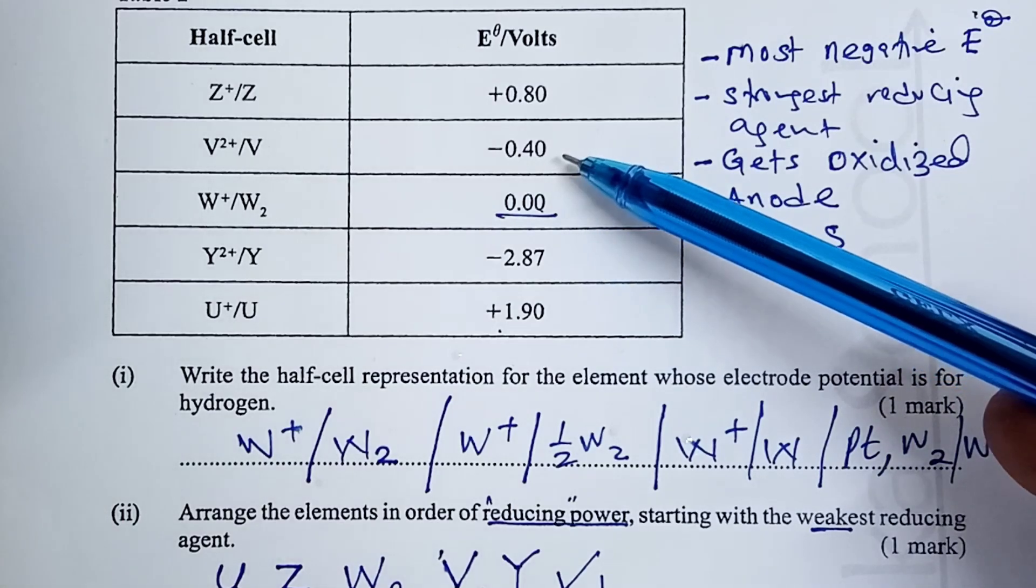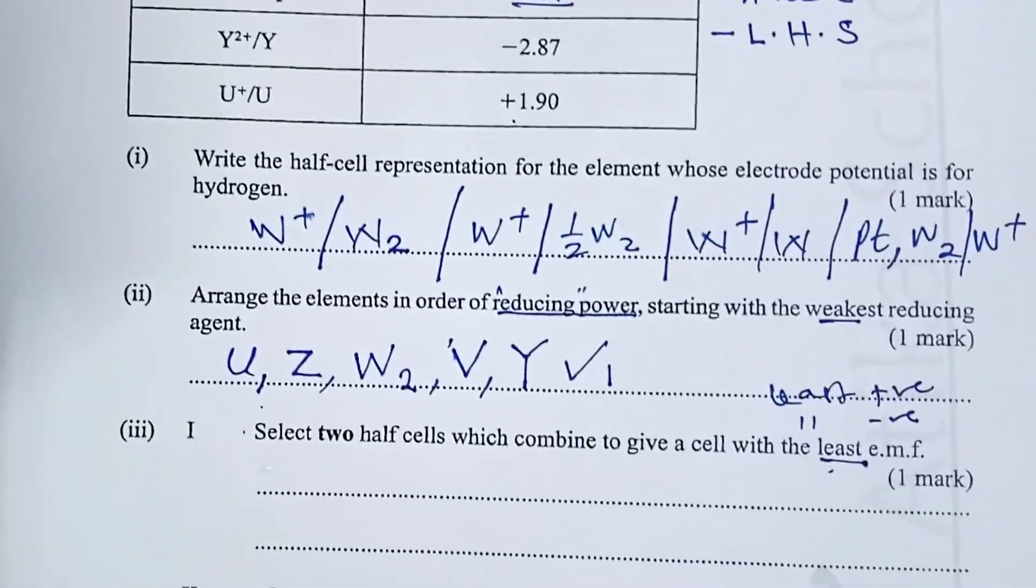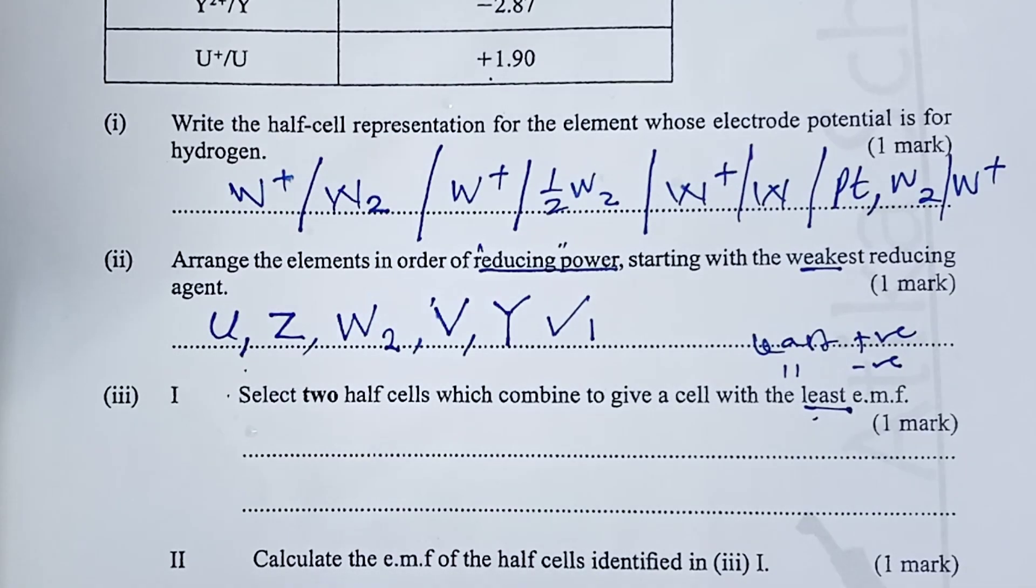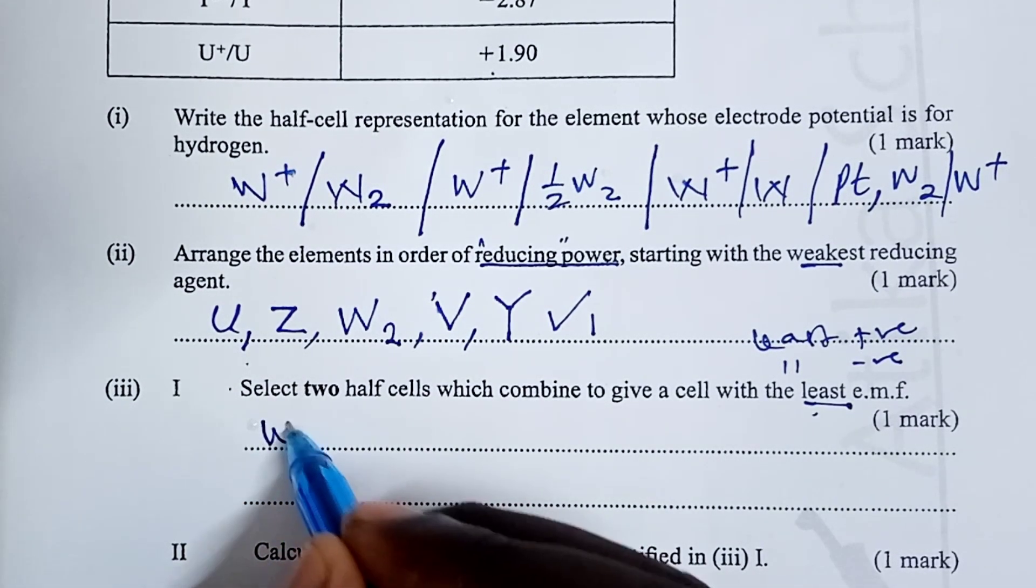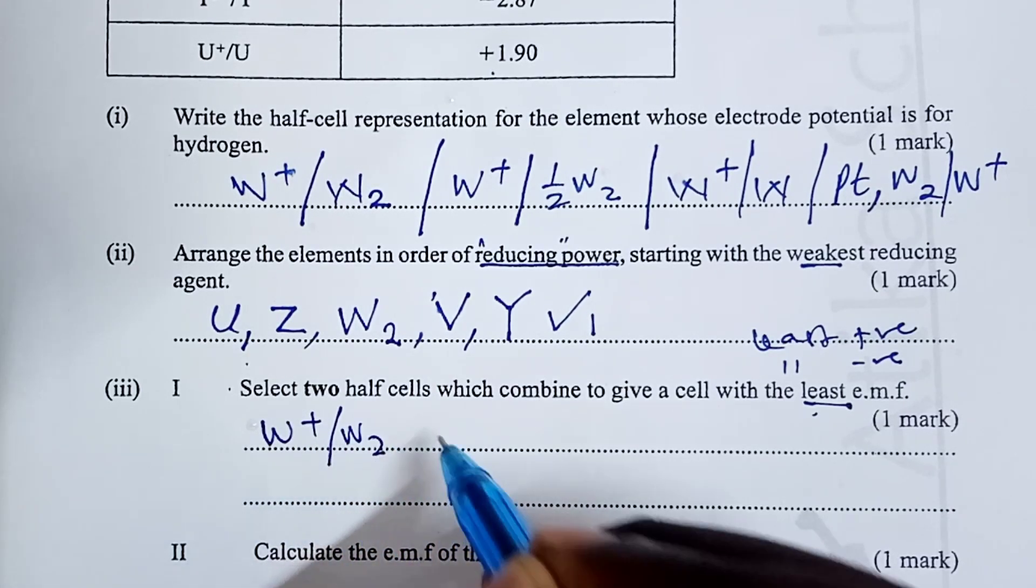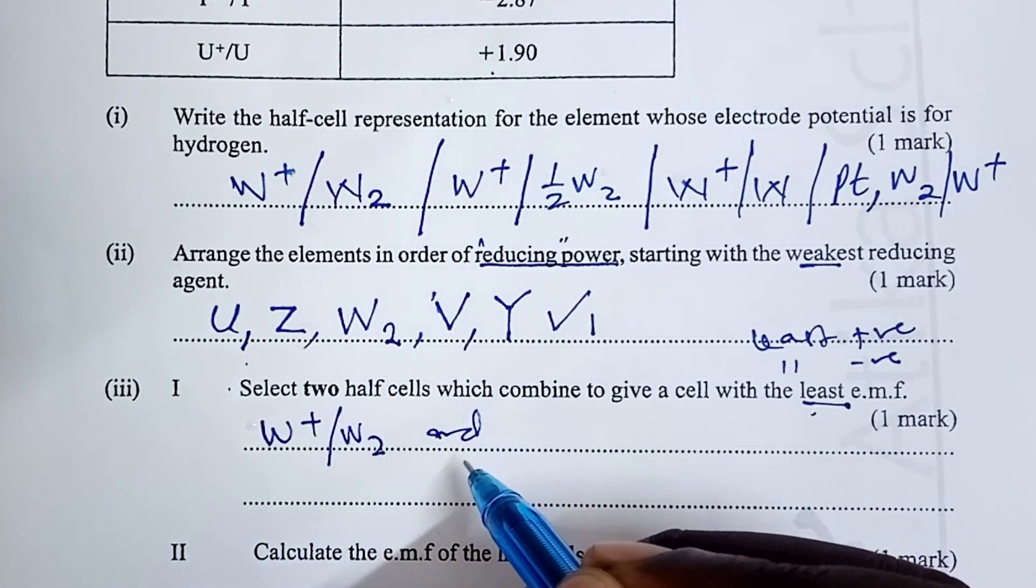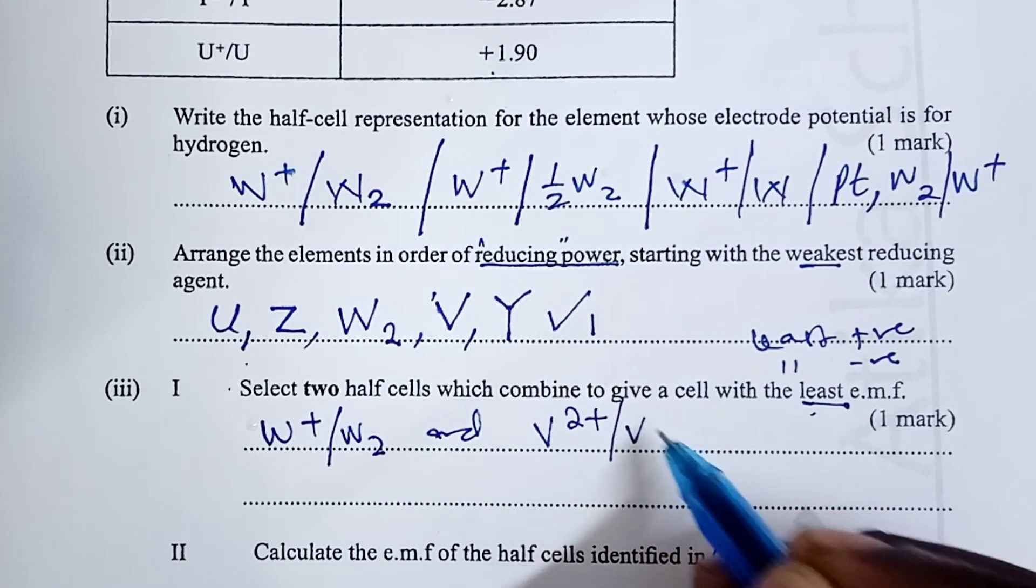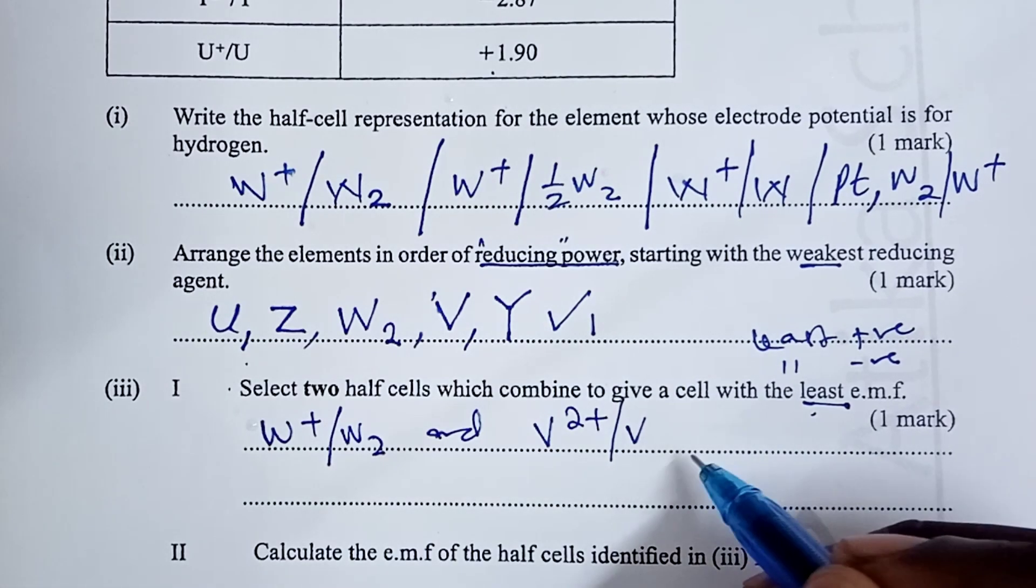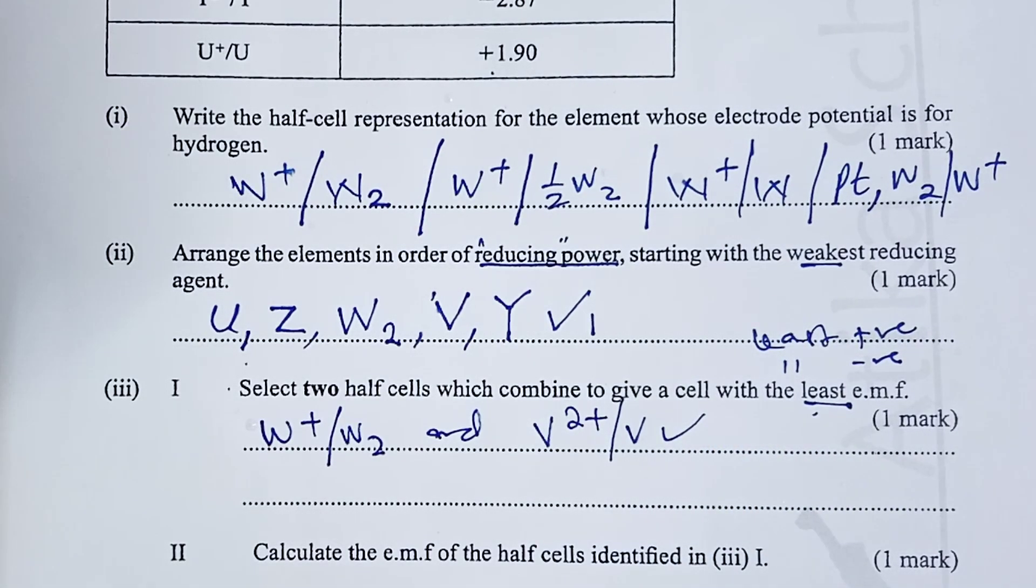Our answer to part three becomes, the one with zero is W plus W2. And, the one with the least negative is V2 plus V. That gives the one mark for part three.